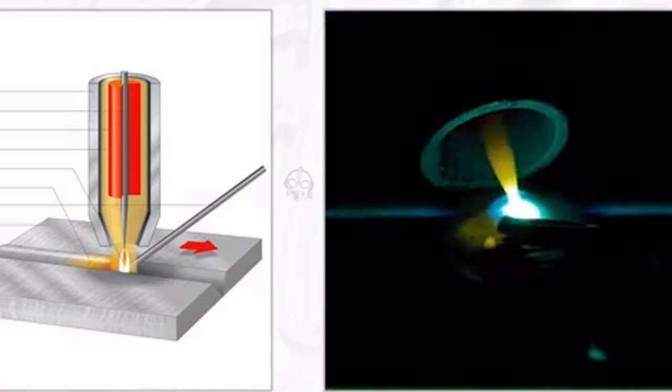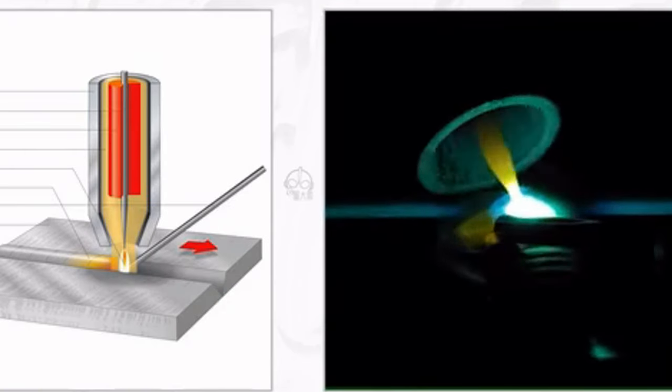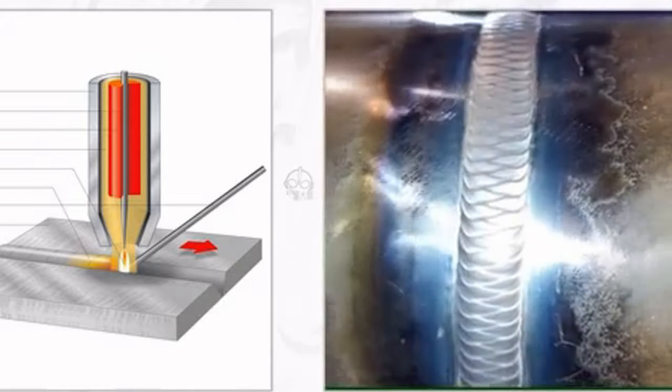However, tungsten carries a small current, so the welding speed is slow. In addition, the price of argon gas is expensive and the cost is high.